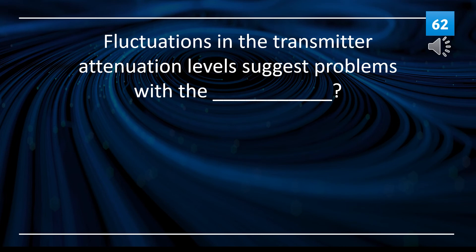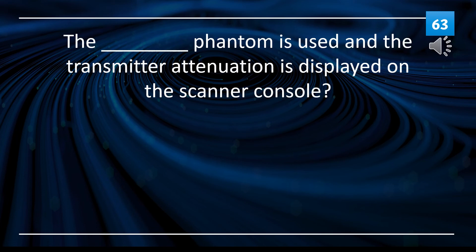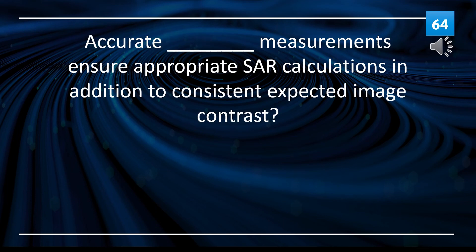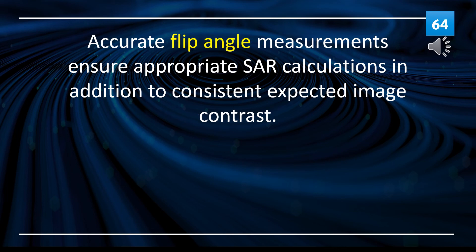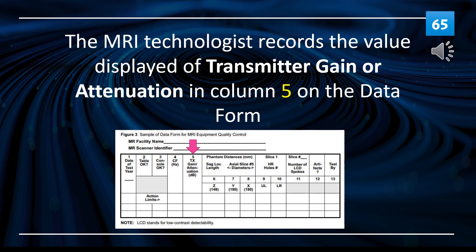Fluctuations in the transmitter attenuation levels suggest problems with the radio frequency chain. The ACR MRI Phantom is used in the transmitter attenuation displayed on the scanner console. Accurate flip angle measurements ensure appropriate SAR calculations in addition to consistent expected image contrast. The MRI technologist records the value displayed of transmitter gain or attenuation in column 5 on the data form.